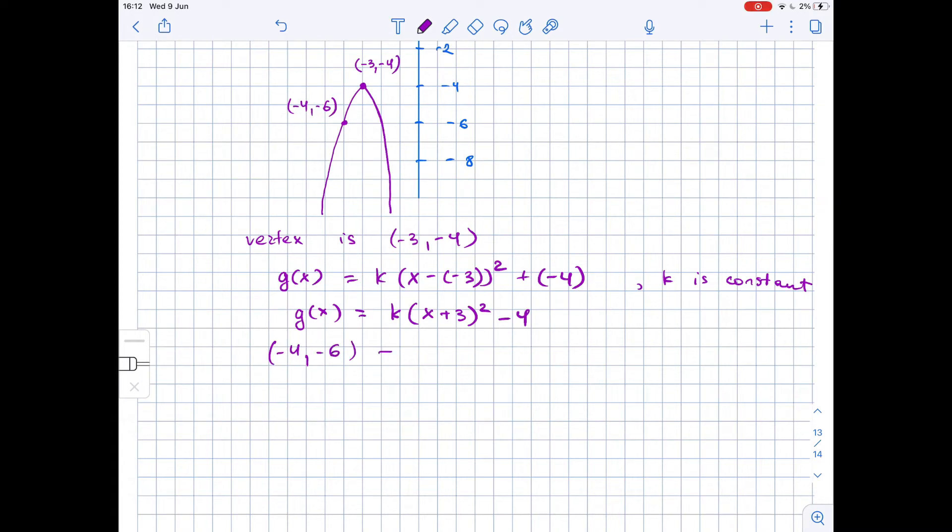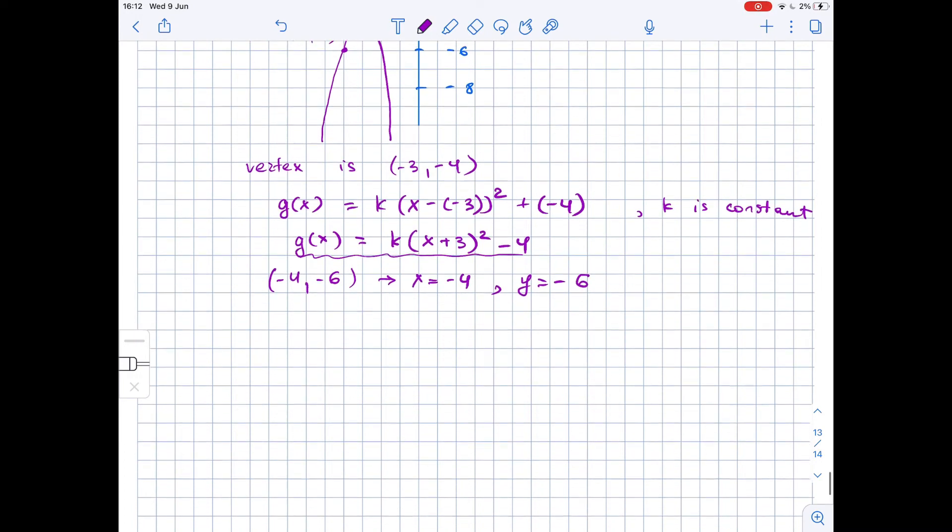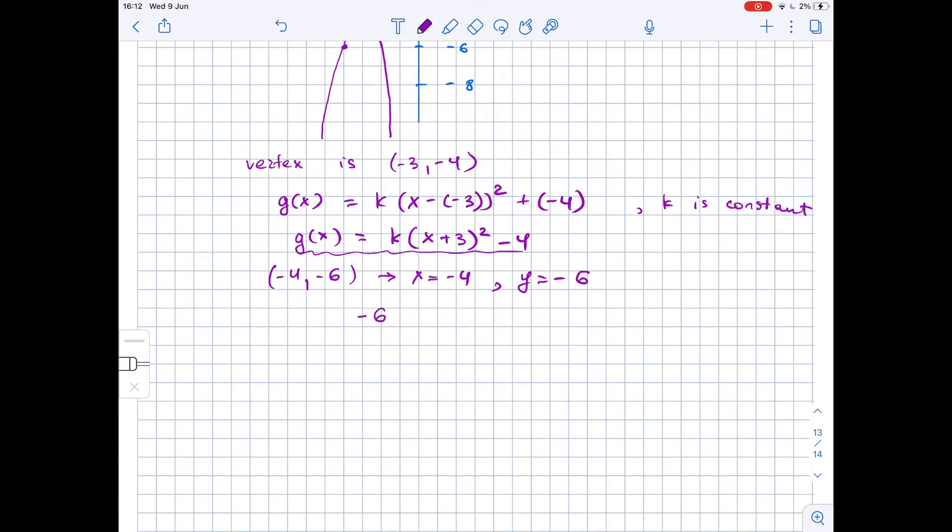So x is equal to negative 4 and y is equal to negative 6, and we can substitute x and y in our function with these values. So we get -6 is equal to k times (-4 + 3) squared minus 4.